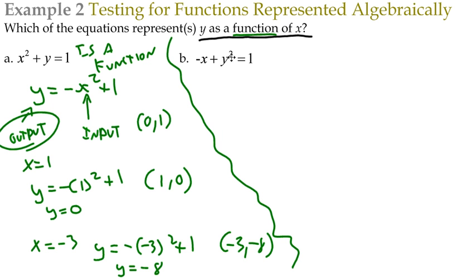Now let's take a look at this guy. Again, solve for y. That's what you always want to do when you want to find out if an equation is a function. Let's add x. So y squared equals x plus 1. Then let's take the square root of both sides. So y equals the square root of x plus 1.